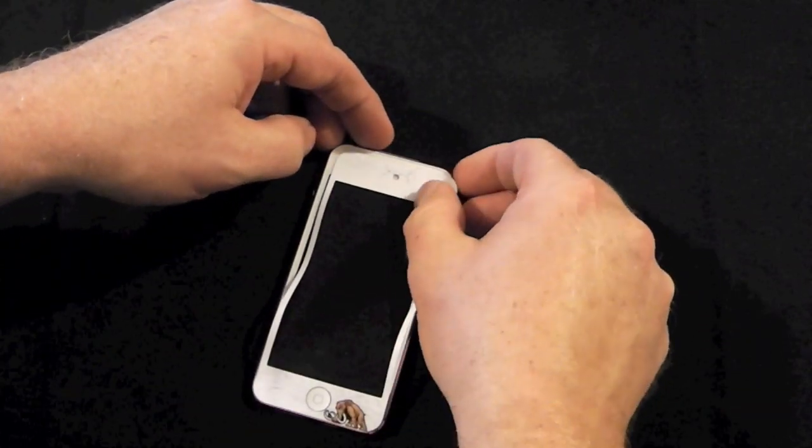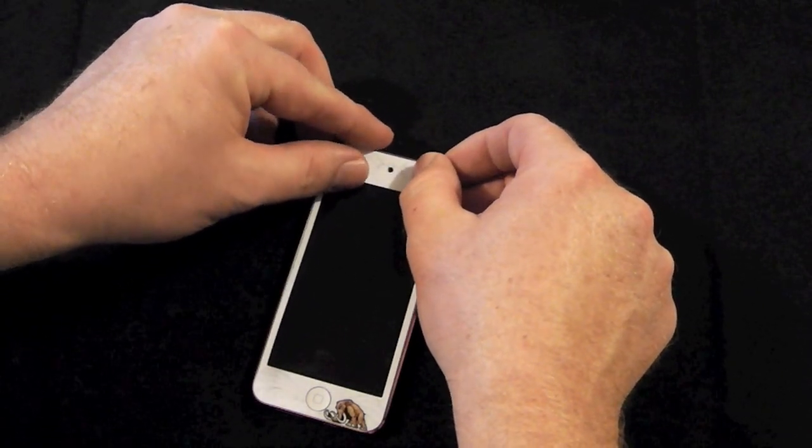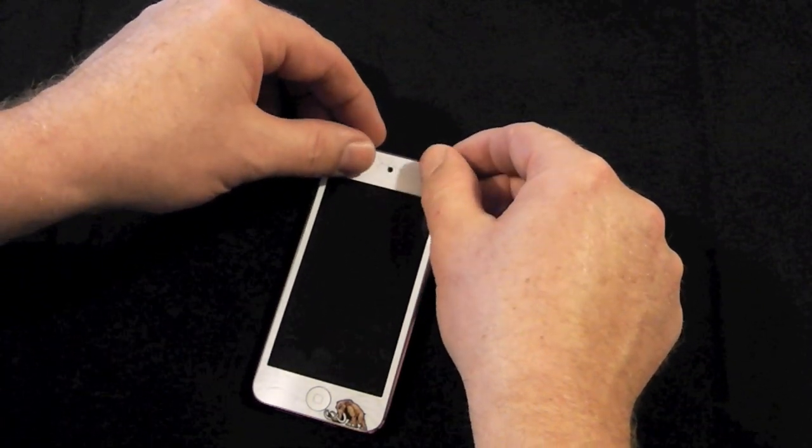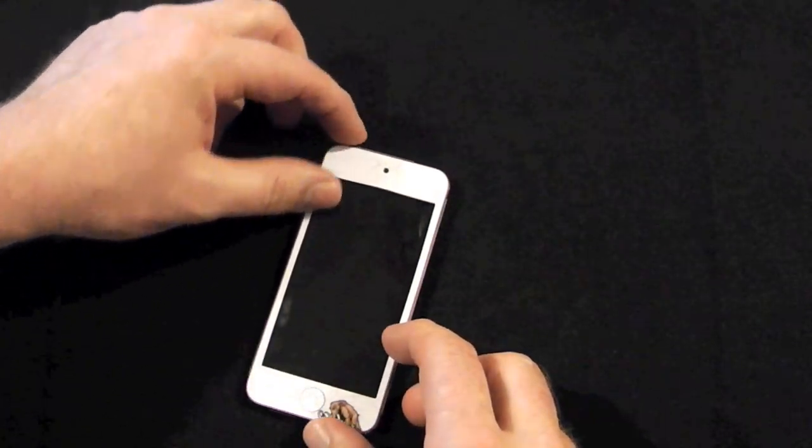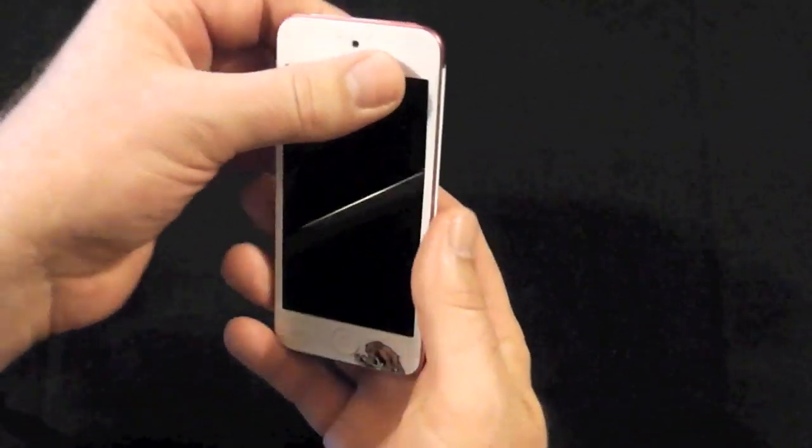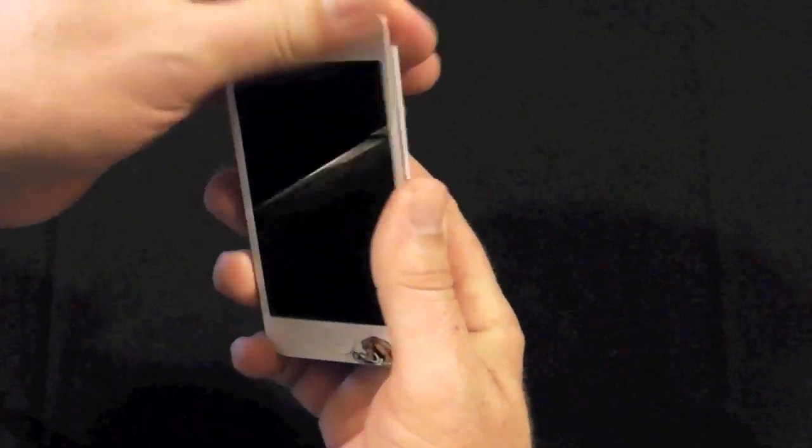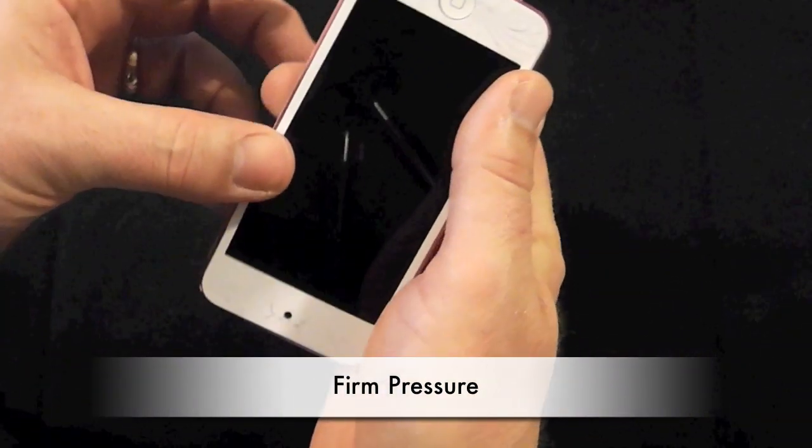Just line up all your, like your button hole. And then up here we have the camera hole. And just gently line it up as you push the sides down. And then once you get it, once you get it positioned, just put firm pressure over the whole skin. Just kind of lock it in place.